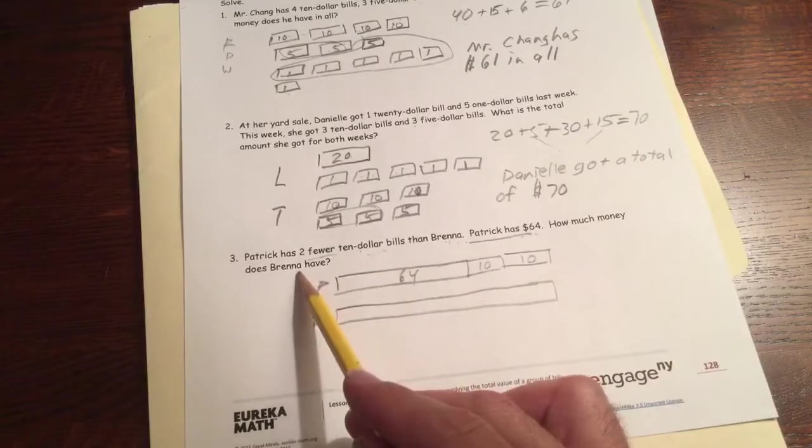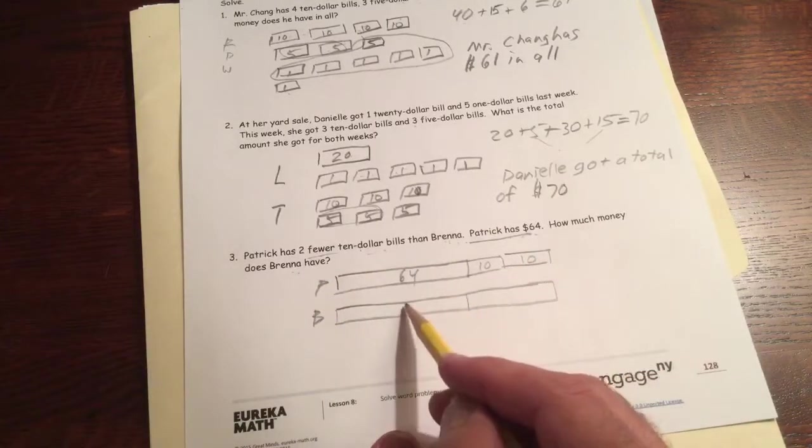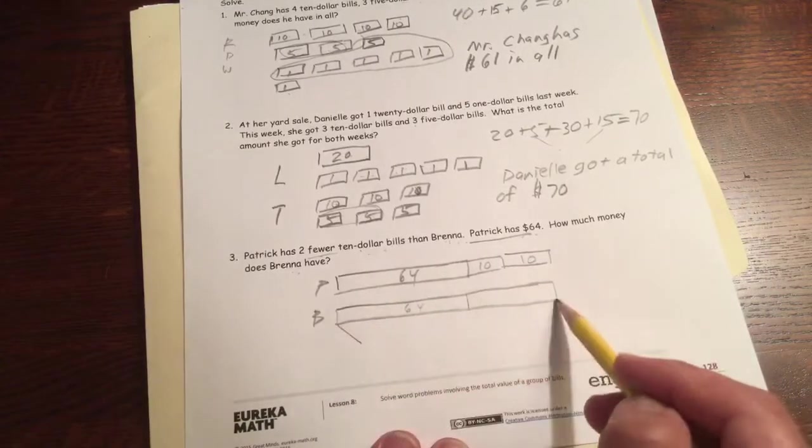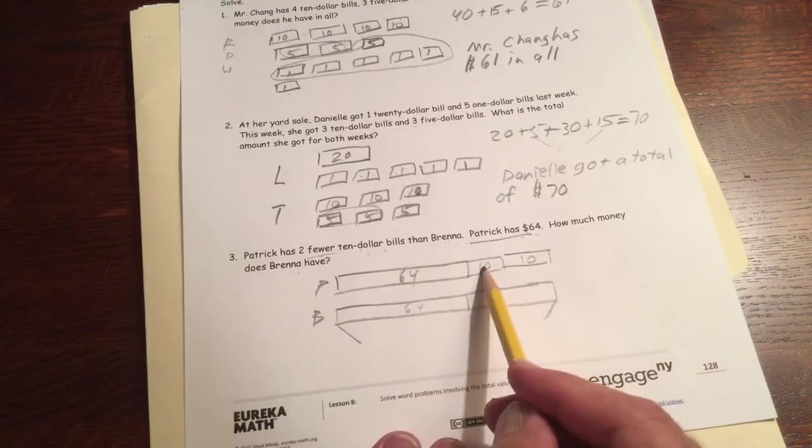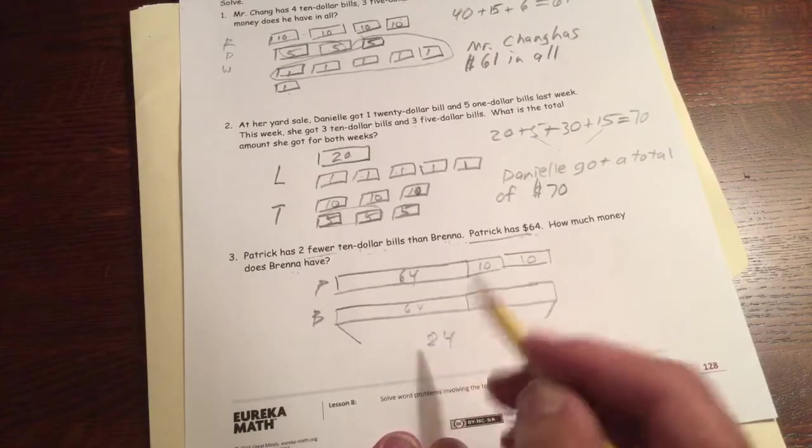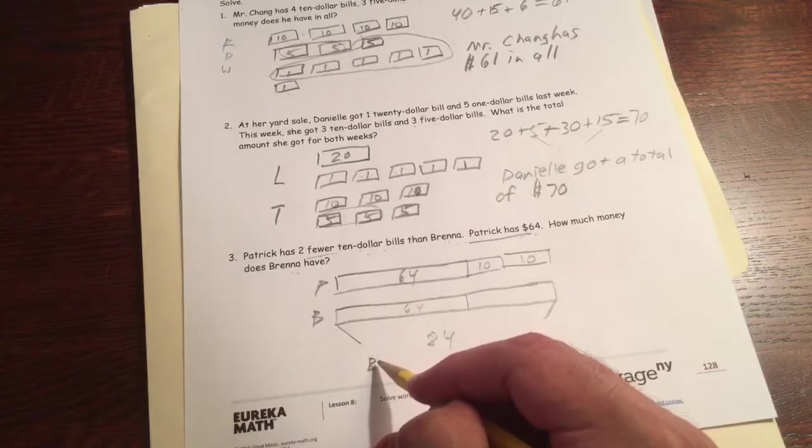How much money does Brenna have? Brenna has all of that. She's got the $64 plus the two $10s. All together, Brenna has $64, $74, $80. She's got $84. $84.